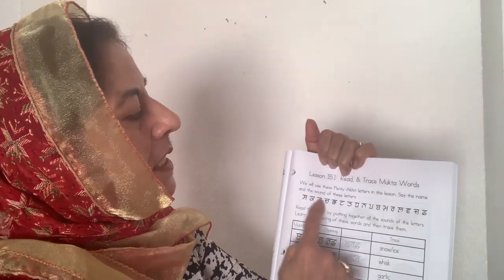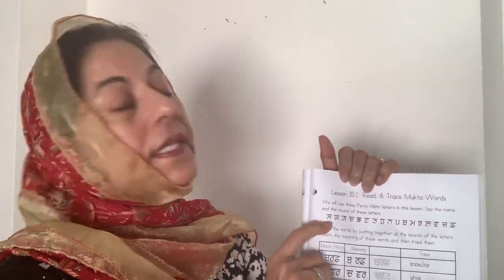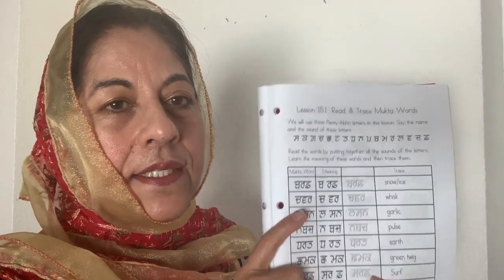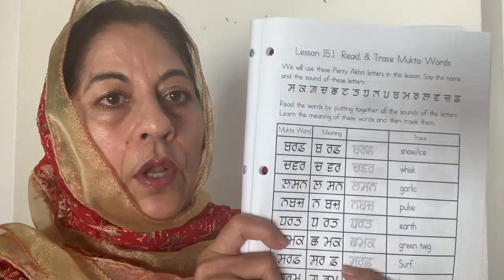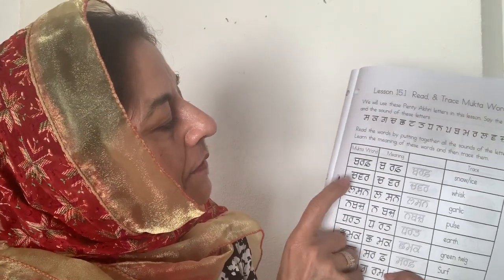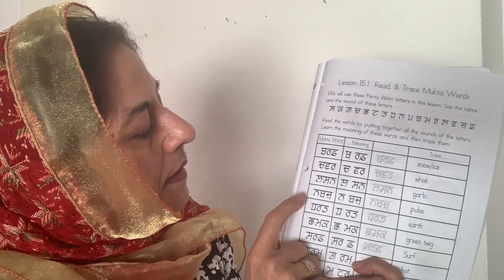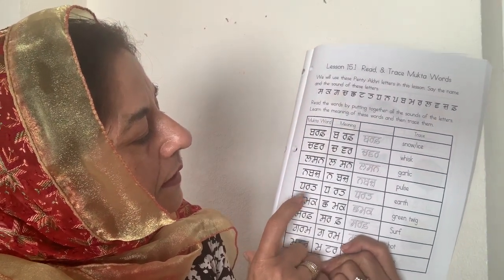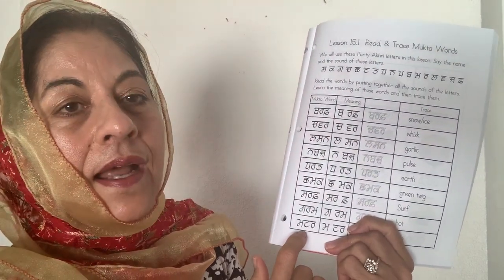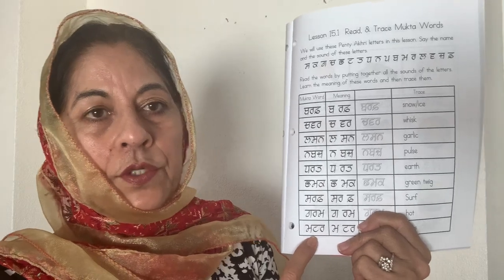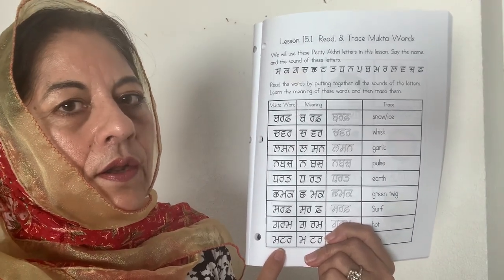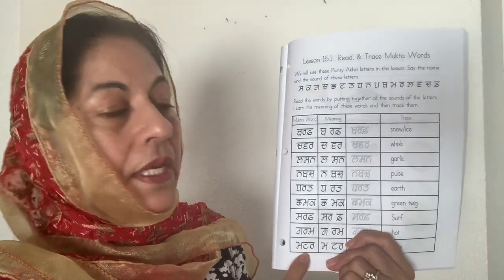Now we will use these Pantyakri letters in this lesson. Say the name and the sound again. I won't say it right now, but you will say it later on — I don't want the lesson to become too long. But these are the words we will learn. You know some of the words and some words are new for you. You will learn all of them, see pictures of them, and learn their meanings.